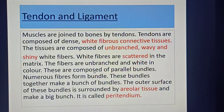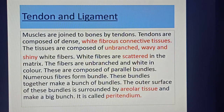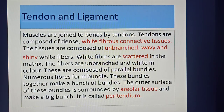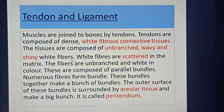The next topic is about tendon and ligament. Muscles — especially the voluntary muscles — are joined to bones by tendons. Tendons are composed of dense white fibrous connective tissues. The tissue is composed of unbranched, wavy, and shiny white fibers. White fibers are scattered in the matrix; the fibers are unbranched and white in color.